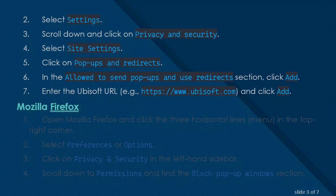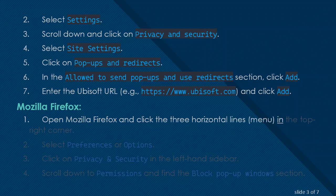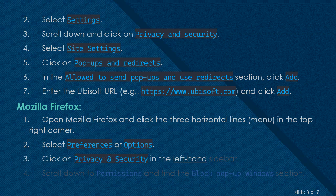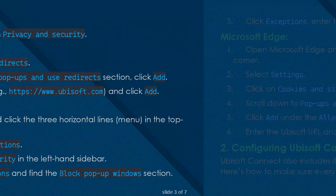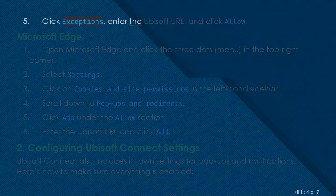Mozilla Firefox: Open Mozilla Firefox and click the three horizontal lines menu in the top right corner. Select Preferences or Options. Click on Privacy and Security in the left-hand sidebar. Scroll down to Permissions and find the Block Pop-Up Windows section, click Exceptions, enter the Ubisoft URL, and click Allow.